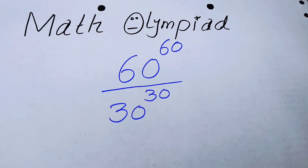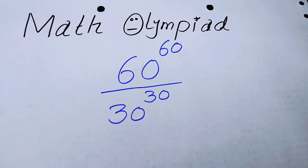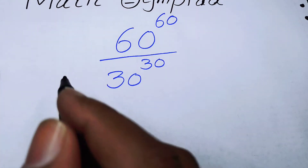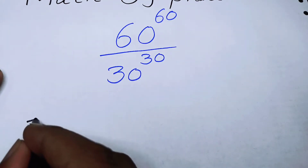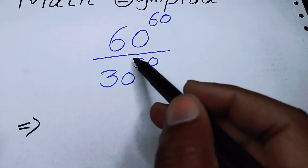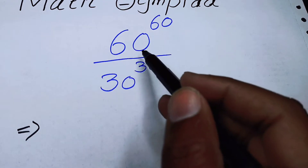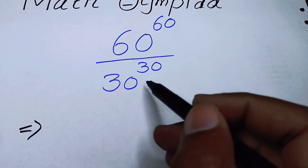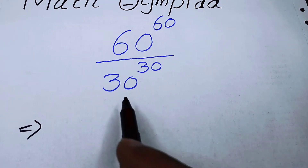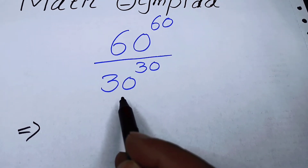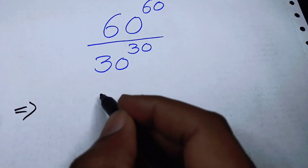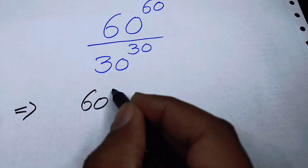In this video we are going to solve a nice power division problem. The question is 60 to the power of 60 over 30 to the power of 30.